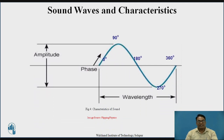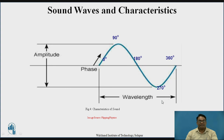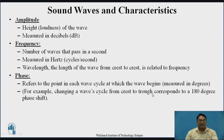Now, what are sound waves and what are their characteristics? The characteristics of sound waves are: first, amplitude — we have seen that amplitude of the sound decreases as distance increases. Similarly, phase also plays an important role when a sound wave is considered. Also, wavelength — the distance between the upper crest and the lower crest is denoted as the wavelength of the sound. Amplitude denotes the height and loudness of the wave, and is measured in decibels.